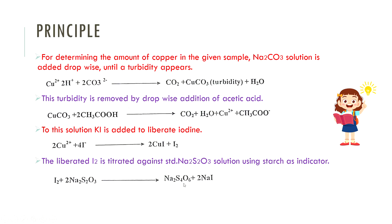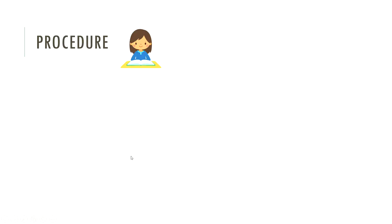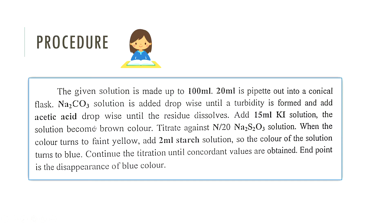This is the principle of the reaction. The procedure is as follows: prepare the brass solution for 100 ml and take 20 ml, then pour into a conical flask. Na2CO3 solution is added dropwise until turbidity is formed. Then add acetic acid dropwise until the residue dissolves. Then add KI solution — the solution becomes a dark yellowish-brown color.